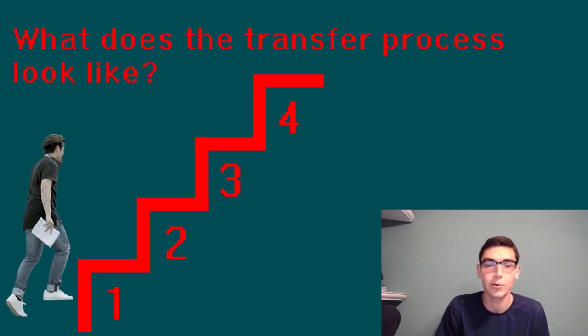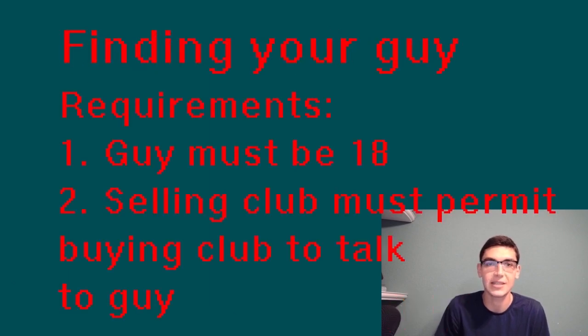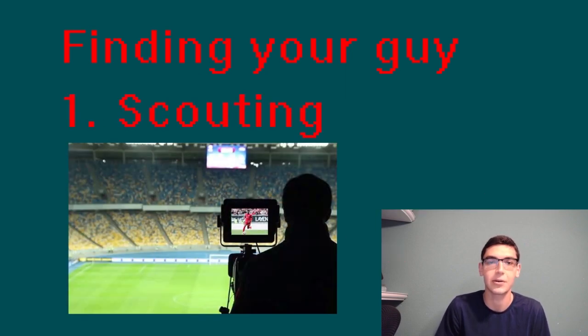The first step is pretty simple. The buying club needs to find a player that they want to acquire. The player they hope to acquire must be 18 years old, and the selling club must give the buying club permission to speak to the player before negotiations begin. Teams evaluate players through a few different ways. The wealthiest clubs have their own scouting systems, with professional scouts sent to other leagues to observe potential transfer targets.